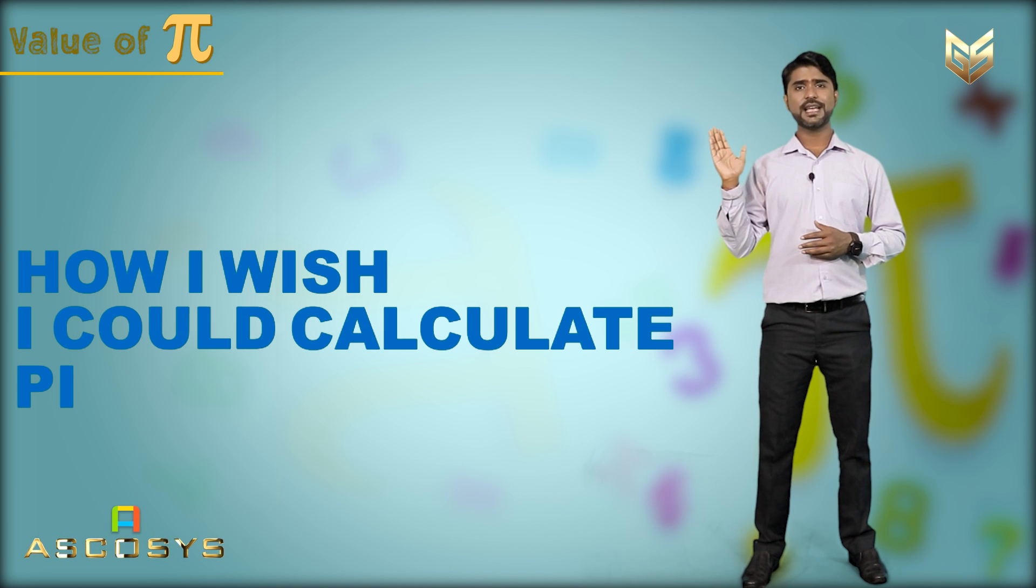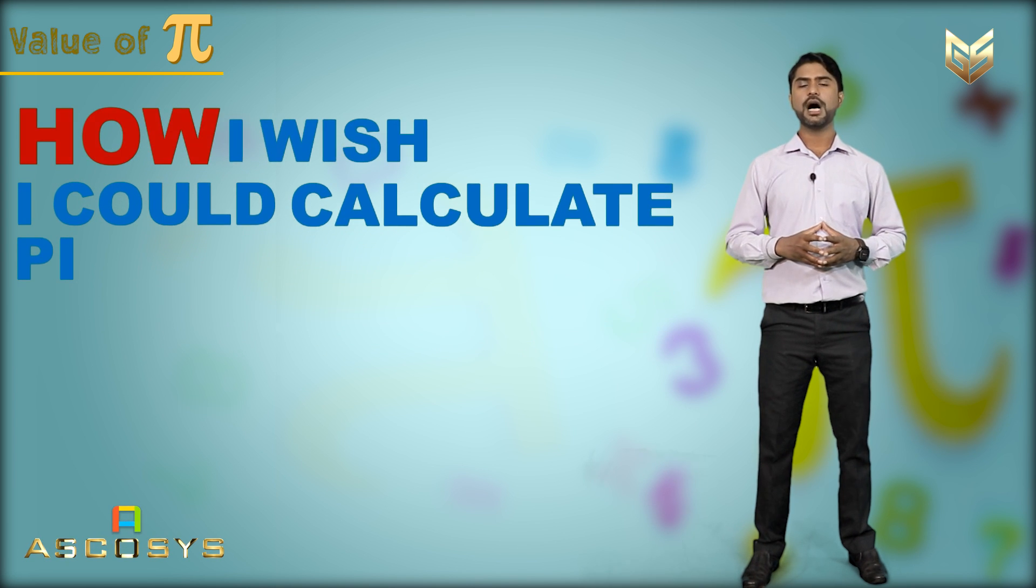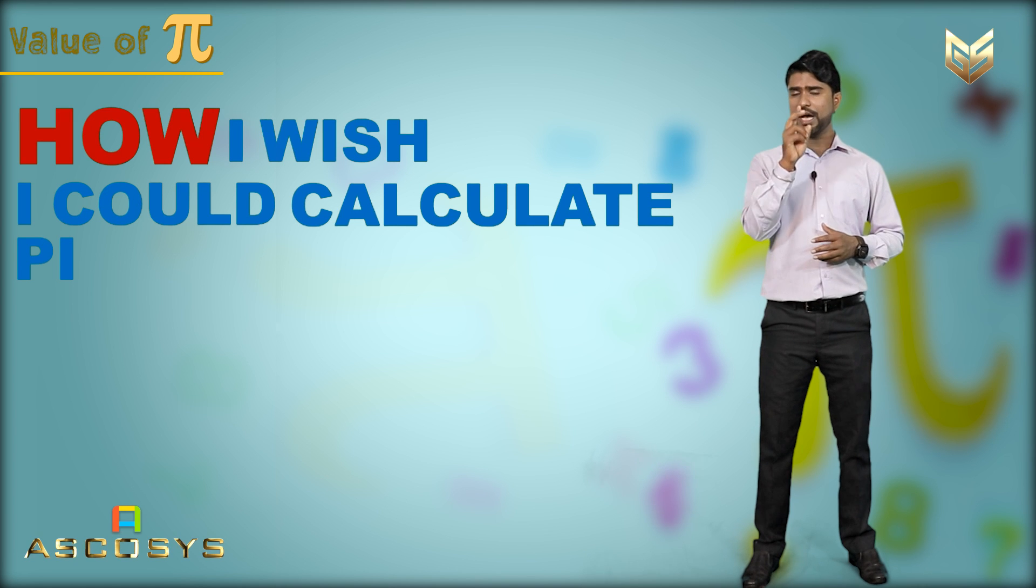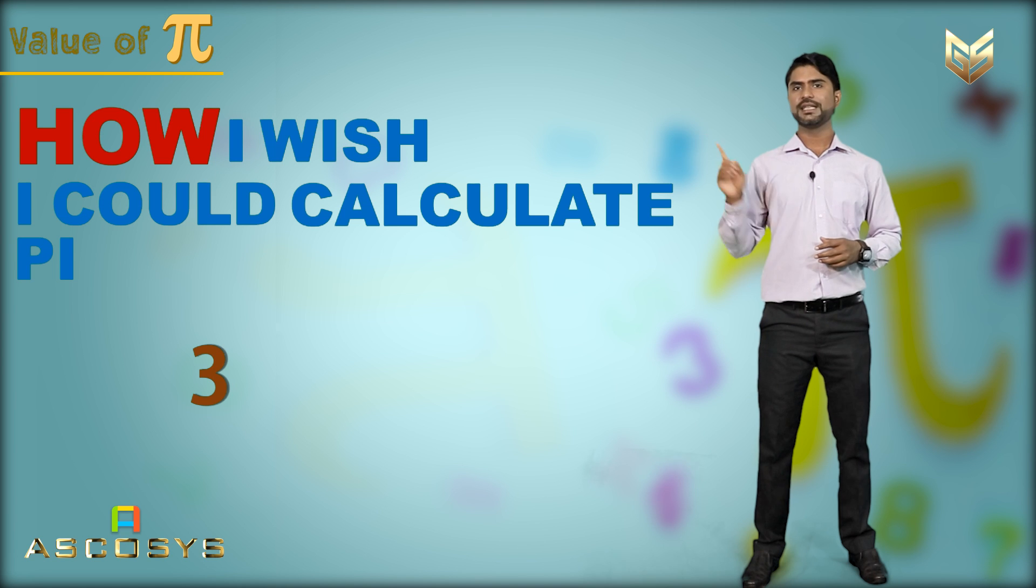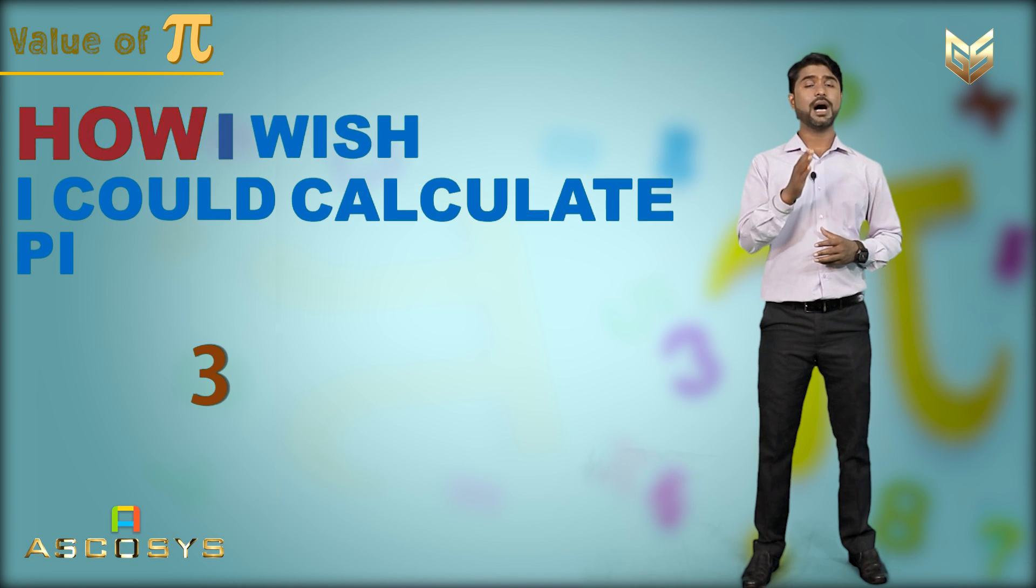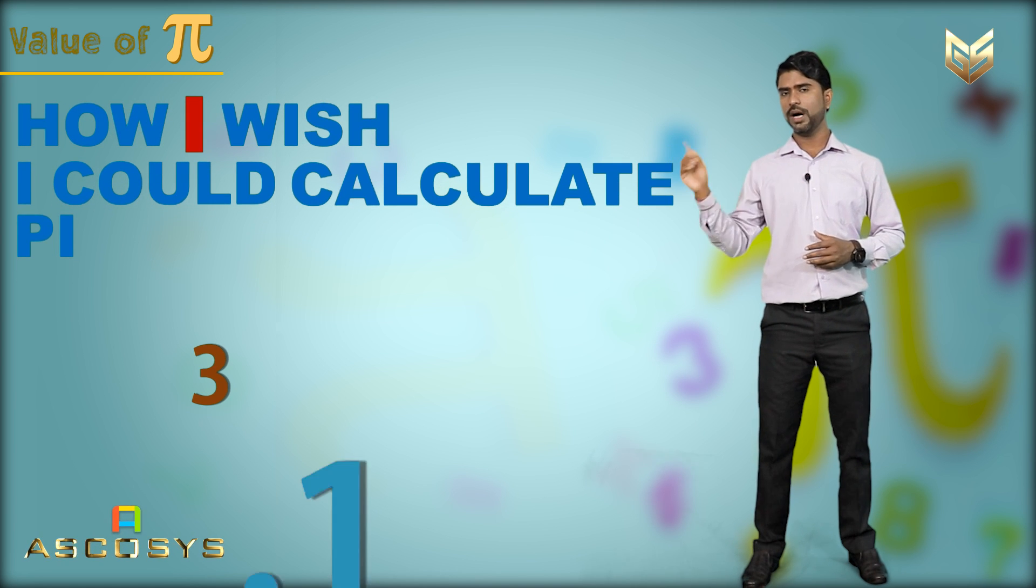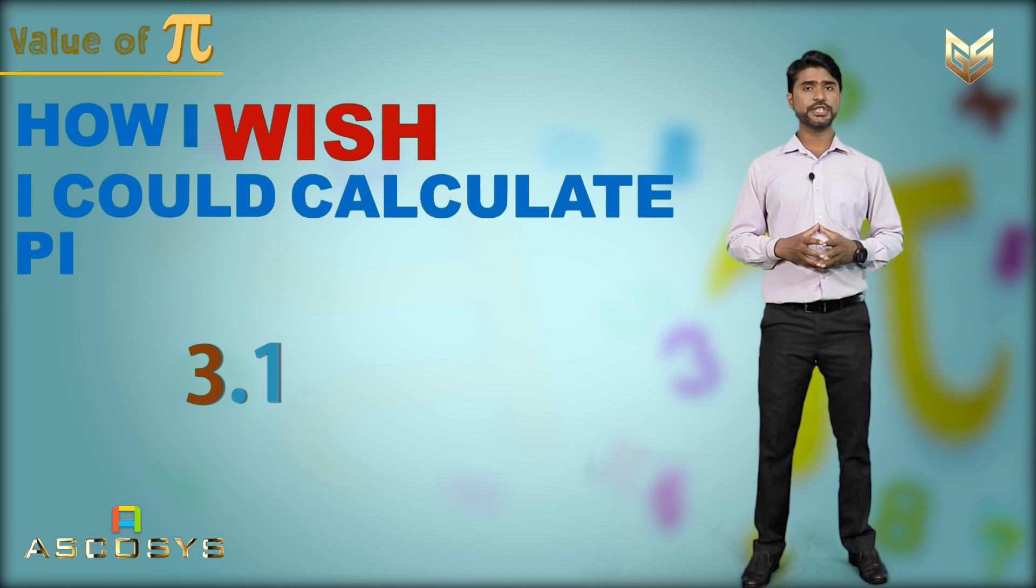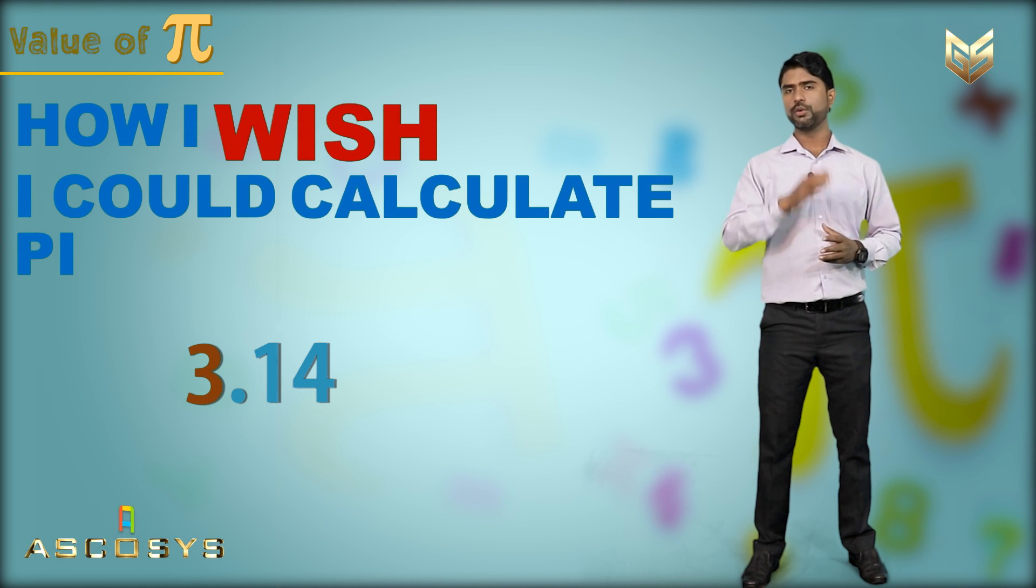So here, in this sentence, the first word is how. In how, there are three letters. For that, three. Then decimal point, how I. For I, one. How I wish. For wish, four. Three point one four.